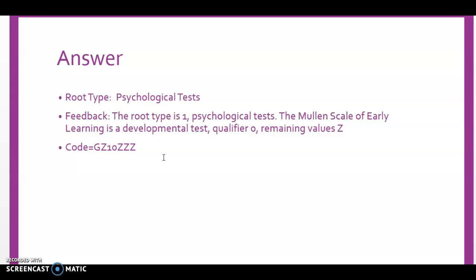Table GZ1 is on page 800. The definition reads: 'The administration and interpretation of standardized psychological tests and measurement instruments for the assessment of psychological function.' Our qualifier for the fourth character is zero for developmental, and characters five, six, and seven are all Z. So our code is GZ10ZZZ.